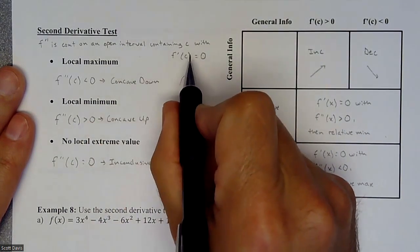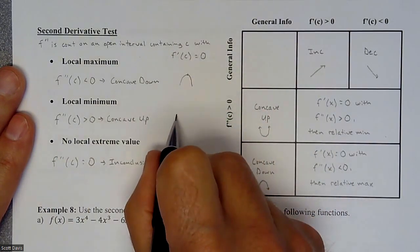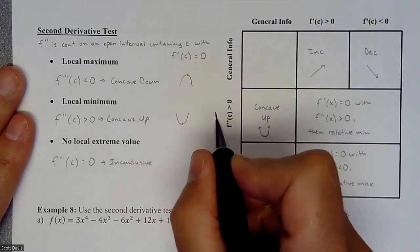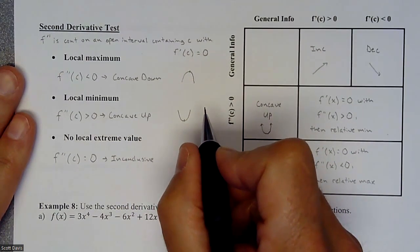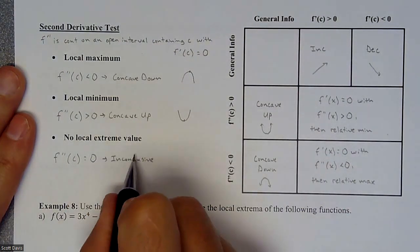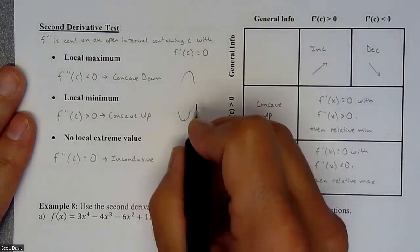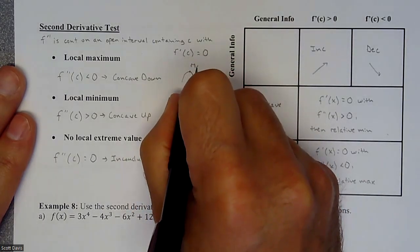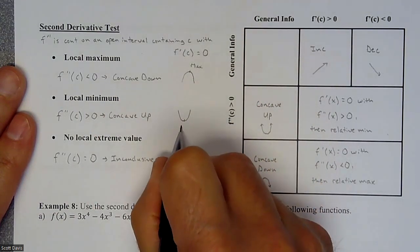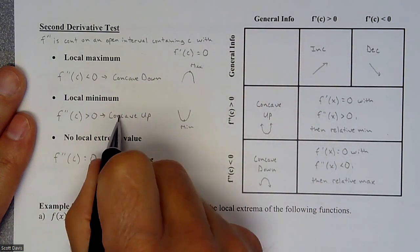If we plug in that same critical value and get a positive concavity, then it's going to have that concave-up shape, which means we would have had some sort of a minimum. And if you plug it in and get a zero, it's inconclusive. So to summarize: concave down at a critical number means we had a maximum there; concave up at that critical value means we had a minimum.